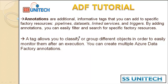Annotations are additional informative tags that you can add to specific factory resources. The resources could be pipelines, datasets, linked services, and triggers. By adding the annotation, you can easily filter and search for any specific factory resource. A tag allows you to classify or group different objects in order to easily monitor them after an execution.